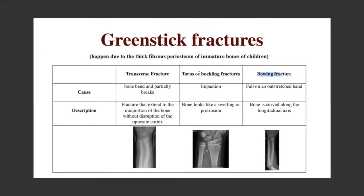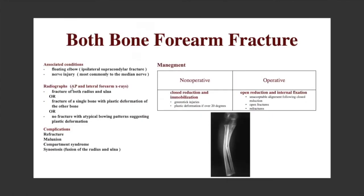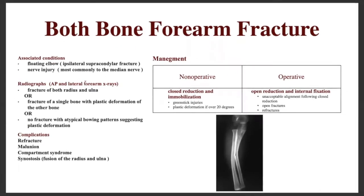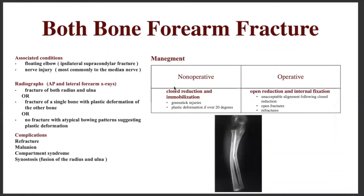Both-bone forearm fractures are usually associated with nerve injuries, most commonly the median nerve, and with floating elbow if it occurs with an ipsilateral supracondylar fracture. On anteroposterior and lateral forearm X-ray, look for fractures in both the radius and ulna, or a fracture in one bone with plastic deformation of the other, and do not miss plastic deformation of both bones.